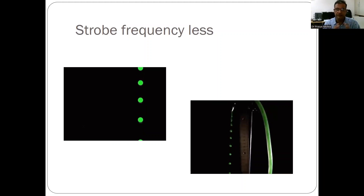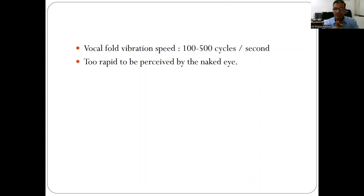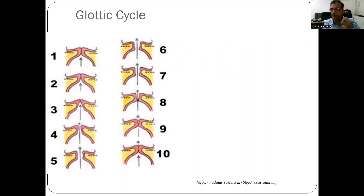Anything moving very fast cannot be perceived by the naked eye, as the retina perceives it as a single image. Vocal folds vibrate at a speed of 100 to 500 cycles per second — obviously the naked eye cannot perceive this. In normal video laryngoscopy, we only see the opening and closing of the vocal cords; the individual vibrations are not visible. To see these vibrations, we need a strobe light flickering between 100 and 500 Hz — that is why stroboscopy was developed.